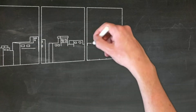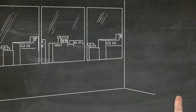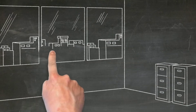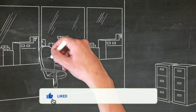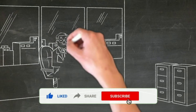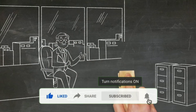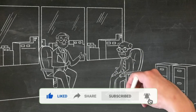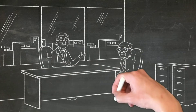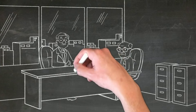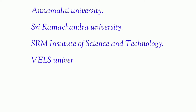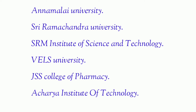If you take this course, you will have top colleges. Annamalai University — this is a government college. Also Sri Ramachandra University, the SRM Institute of Science and Technology at Kattankulathur Campus in Kanchipuram, Wales University in Chennai, JSS College of Pharmacy in Mysore, and Acharya Institute of Technology in Bangalore. These are top colleges in Tamil Nadu and surrounding areas. There are many private colleges as well.